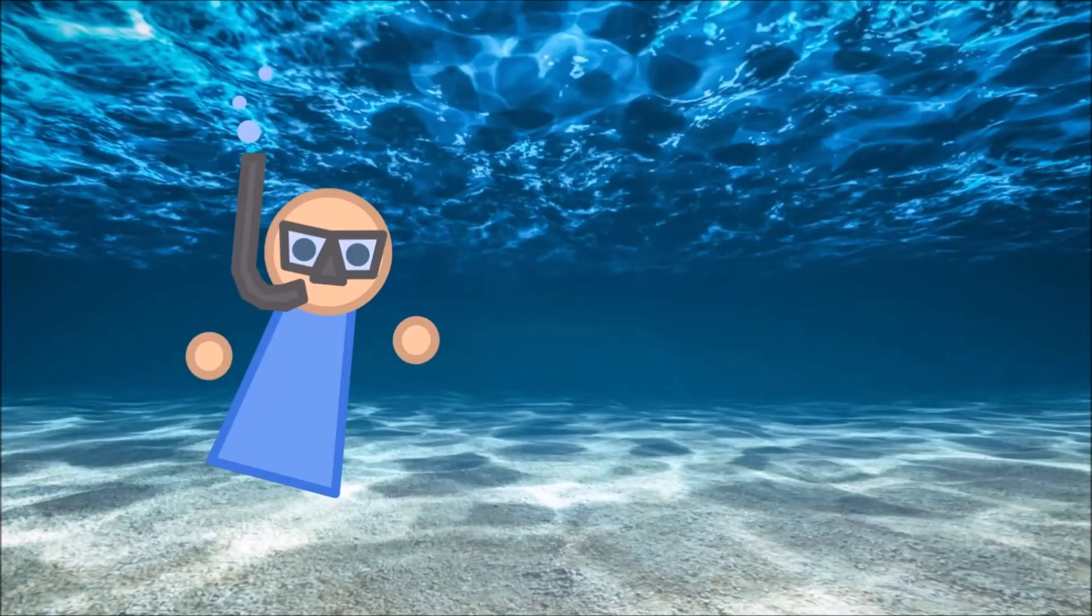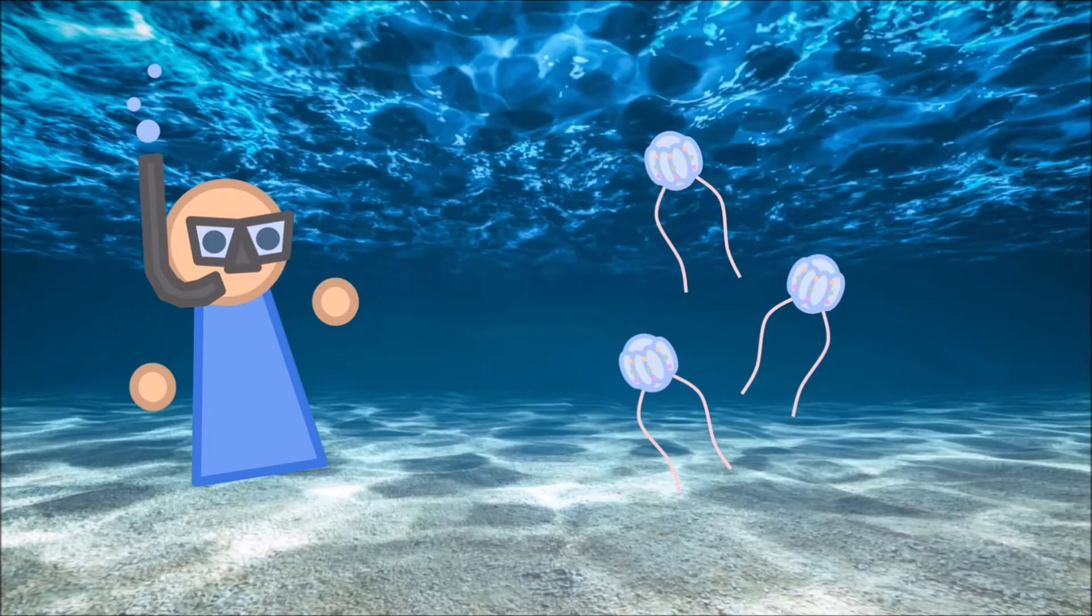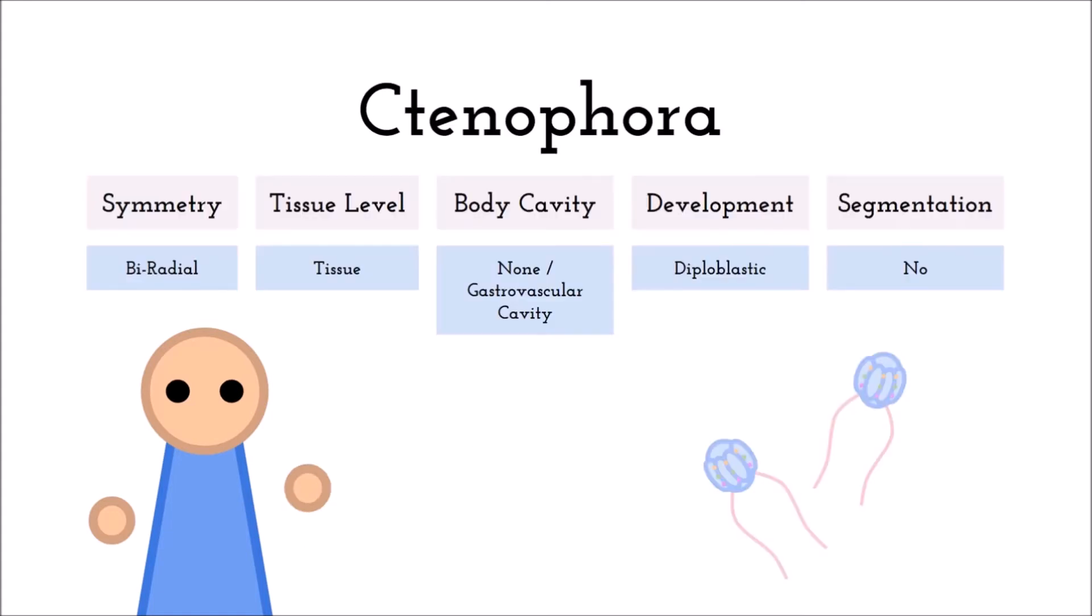Similarly aquatic and jelly, we have our ctenophores. These beautifully iridescent comb jellies share all the same key transitions with the cnidarians, except for their symmetry. Although similar, ctenophores are biradially symmetric, meaning they are mostly radially symmetric, but may have features like tentacles that can only show symmetry on a certain plane. Here's a quick summary of all their key transitions.